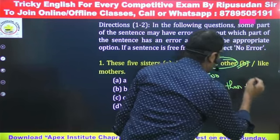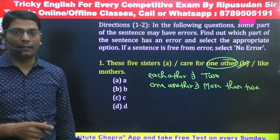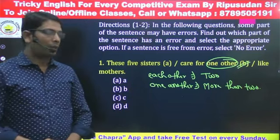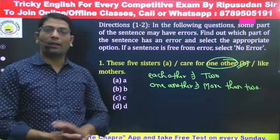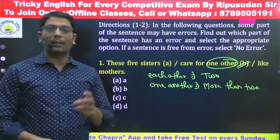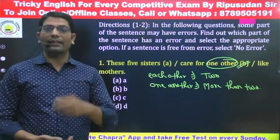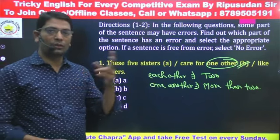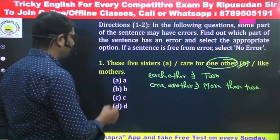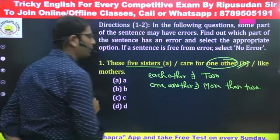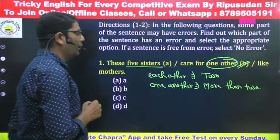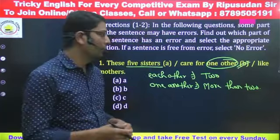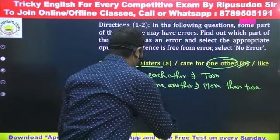इन्हें reciprocal pronoun कहते हैं — परस्पर वाचक सर्वनाम। ये दो होते हैं: each other और one another। Each other का प्रयोग दो के लिए किया जाता है और one another का प्रयोग दो से अधिक के लिए किया जाता है। यहाँ बहनों की संख्या पाँच है, और 'one other' जैसा कुछ होता ही नहीं, इसलिए यहाँ होना चाहिए 'one another'।